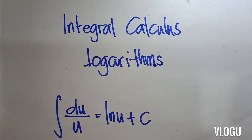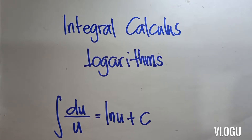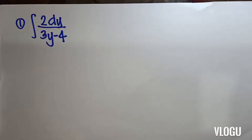In integral calculus on logarithms, we have the integral of du over u, which is equivalent to ln of u plus C. We will now work through our first example.